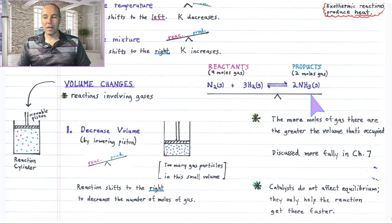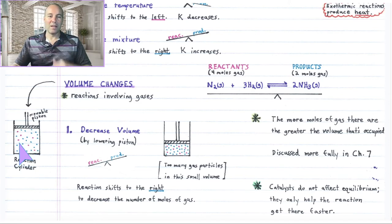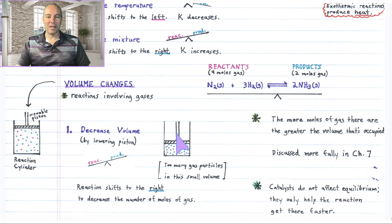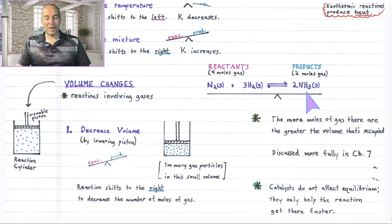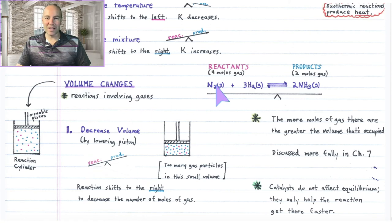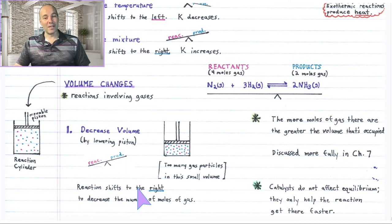Let's consider this reaction at equilibrium, taking place inside of a cylinder. It's at equilibrium, so the forward and reverse directions are just balanced. Let's decrease the volume of the reaction mixture — press the piston down and squeeze the reaction into a smaller volume. The system is going to respond by shifting towards the side that occupies less volume in order to accommodate the smaller volume. There are too many gas particles in this small volume, and the reactant side has more gas particles, so the reaction is going to shift to the right to alleviate that disturbance and decrease the number of moles of gas.